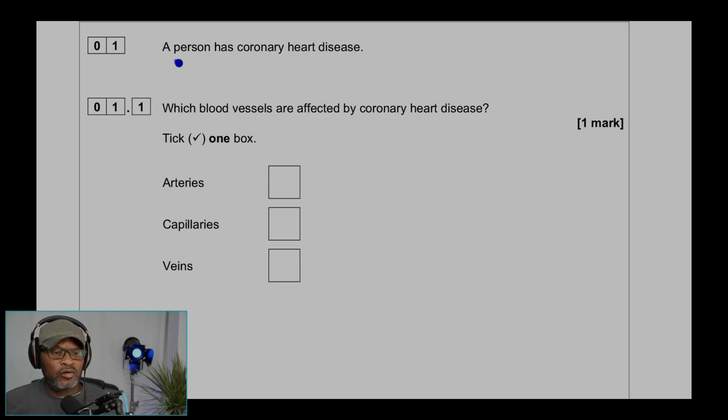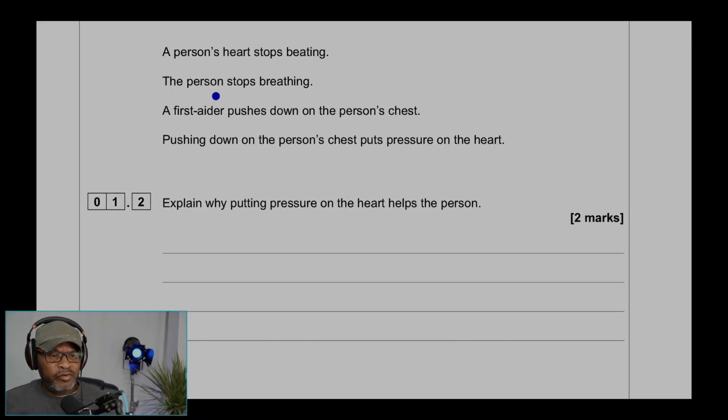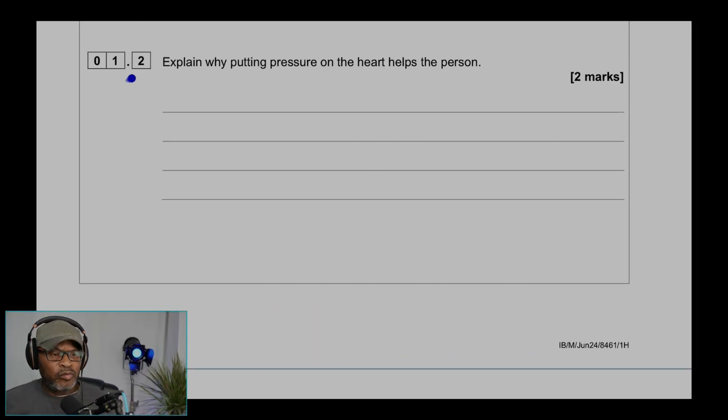Question 1: A person has coronary heart disease. Question 1.1: Which blood vessels are affected by coronary heart disease? Arteries, capillaries, veins. Scotabia arteries. A person's heart stops beating, the person stops breathing. A first aider pushes down on the person's chest. Pushing down on the person's chest puts pressure on the heart.